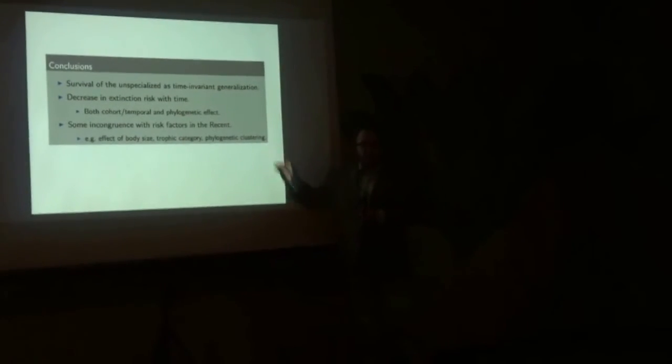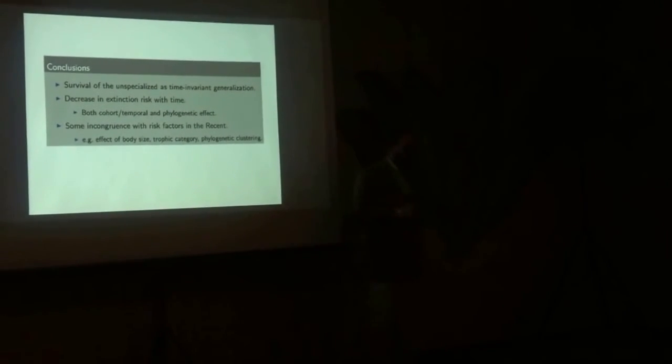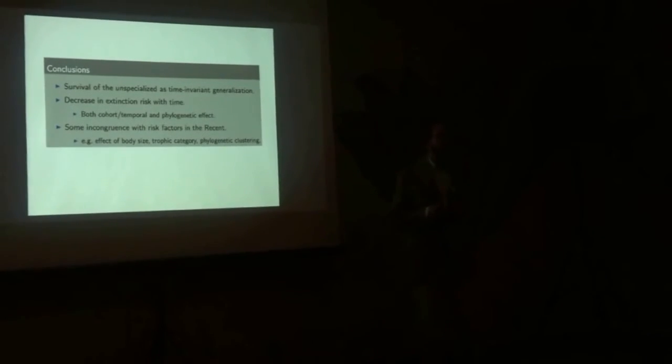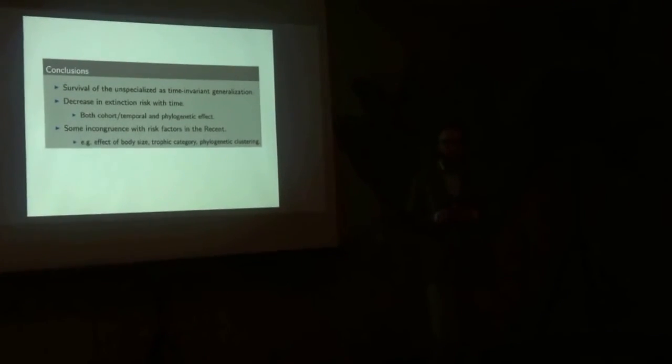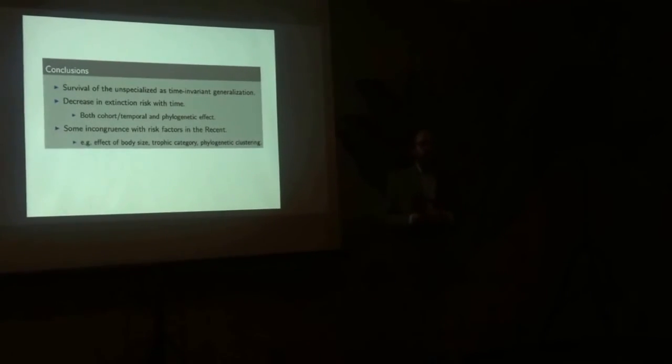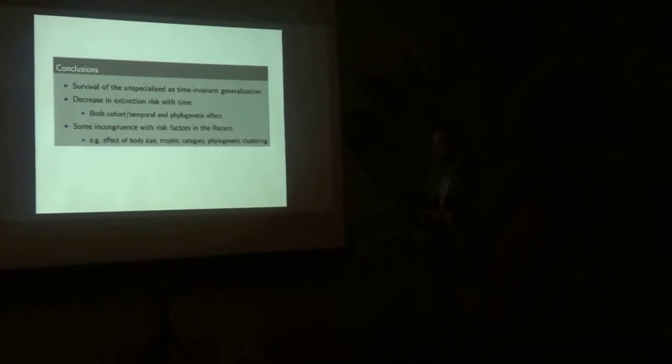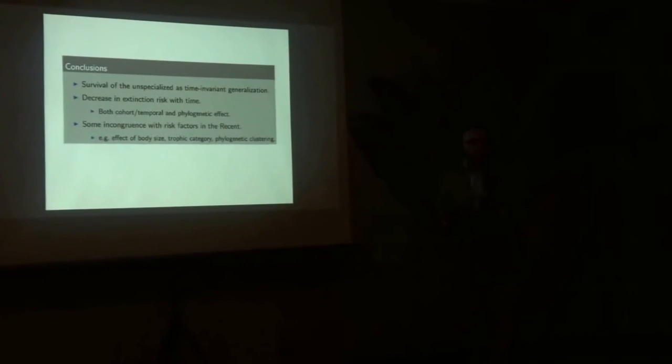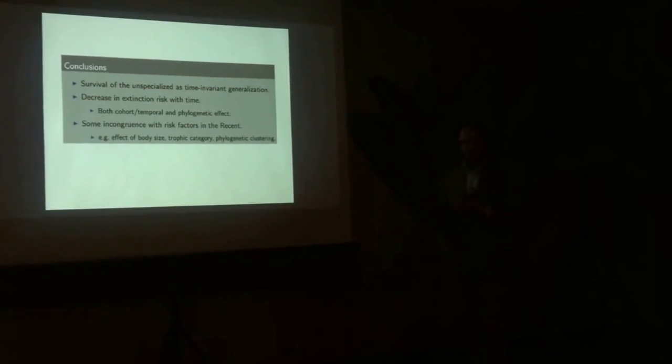So we have in the recent strong selection on body size and certain clades. The strength of the phylogenetic constraint is much greater in the recent, and there's differences with trophic categories. For example, it's really, really bad to be a large carnivore in the recent. That's not really what you would say about the Cenozoic. So some very basic conclusions just from this analysis of the traits.